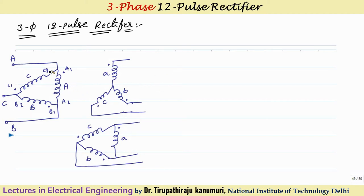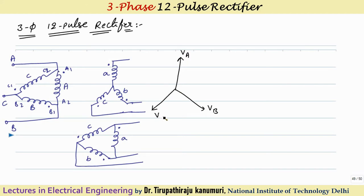Let us see the phasor diagrams. When you are giving the input supply, let us assume the voltage applied to the A phase, represented by ABC on the primary side: this will be VA, the voltage applied to the B phase is displaced by 120 degrees as VB, and the voltage applied to the C phase is VC. When these voltages are applied across the winding, a similar type of voltage will reflect in the secondary side with the same phase angle; only the magnitude will differ depending on the turns ratio.